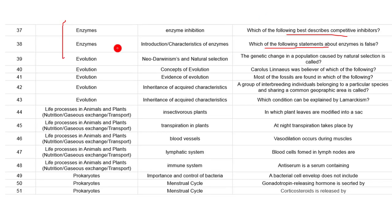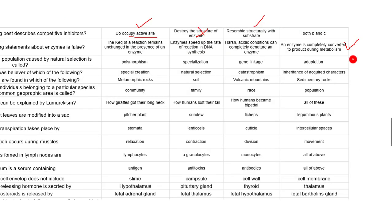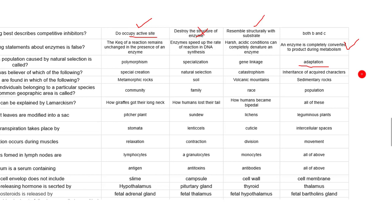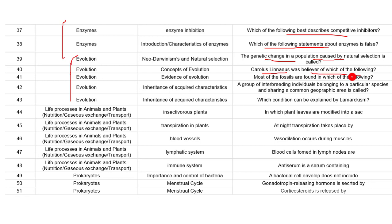Now evolution. The genetic change in a population caused by natural selection is called evolution. Natural selection means the organism best adapted to the environment can survive. Carolus Linnaeus was a believer of which of the following - the inheritance of acquired characters.